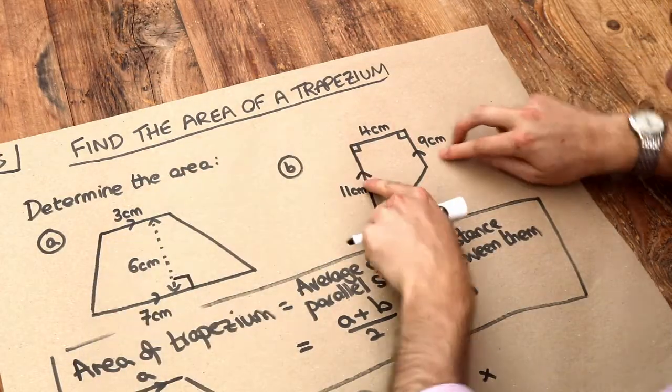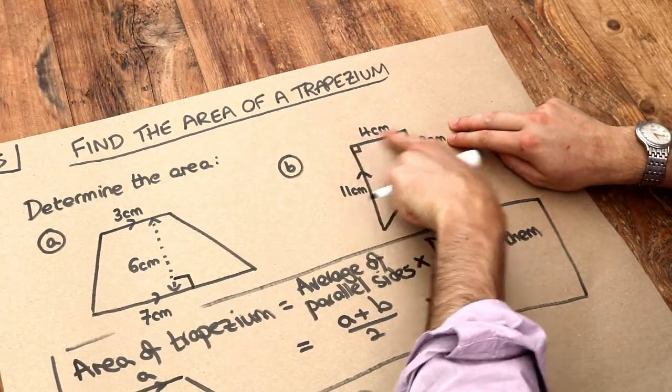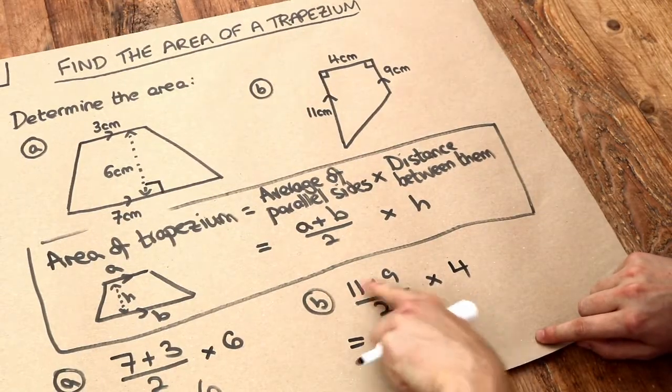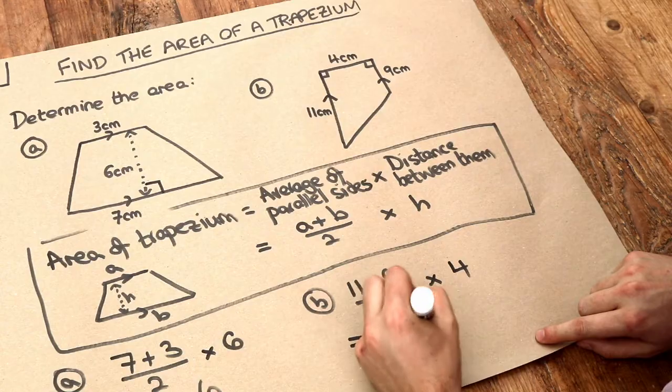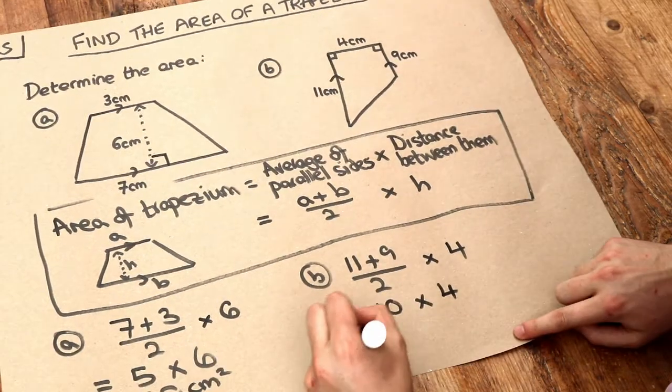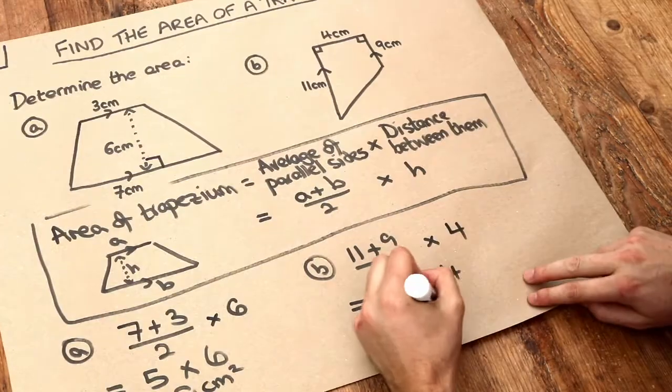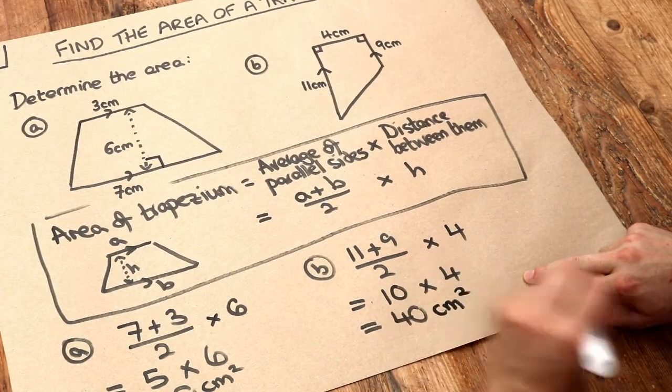The distance between these two sides is that distance here which we can see is four. So we know the average of eleven and nine is ten. We times it by the distance between them that gives us 40 and again this is in centimeters so it'll be centimeters squared our unit for area here.